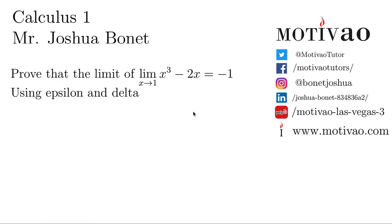This is Joshua again with Calculus 1, proving the limit using epsilon and delta. The first thing we want to do is to write the definition.